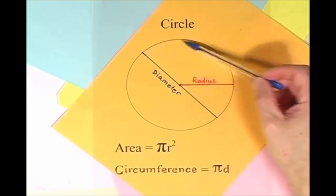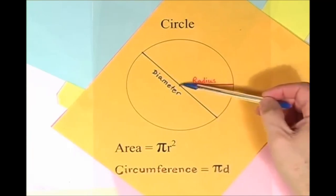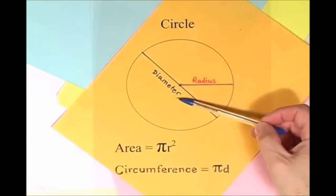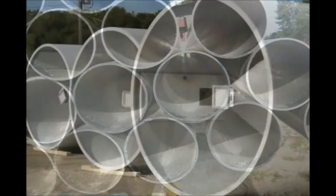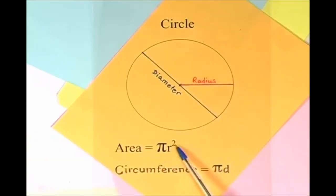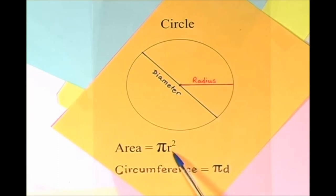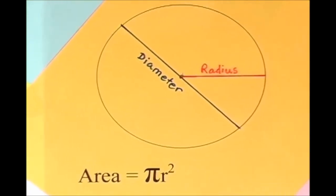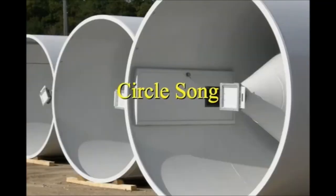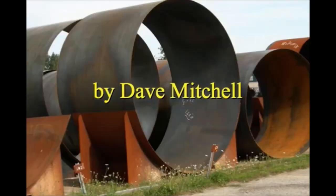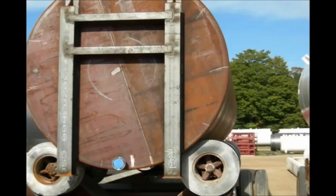Here is a circle, it knows how to get around. It has a radius from center to rim. And its diameter's a line that goes from side to side while passing through the center, now isn't that simple. Pi r squared sounds like area to me, when I need a circumference, I'll just use pi d. Pi r squared sounds like area to me. Here is a circle.